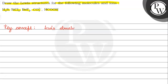Lewis noticed that the noble gases are very stable, so he gave us a rule called the octet rule. He says that every element wants to achieve its nearest noble gas configuration — except helium, which only needs 2 electrons. The rule is called the octet rule: every element should have 8 electrons in its outermost shell.